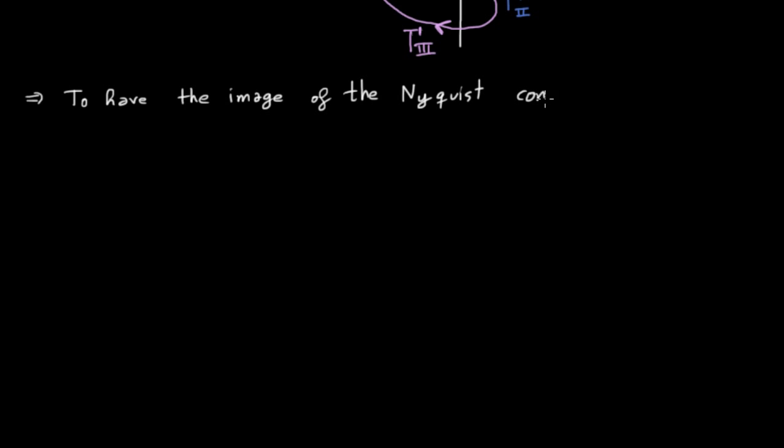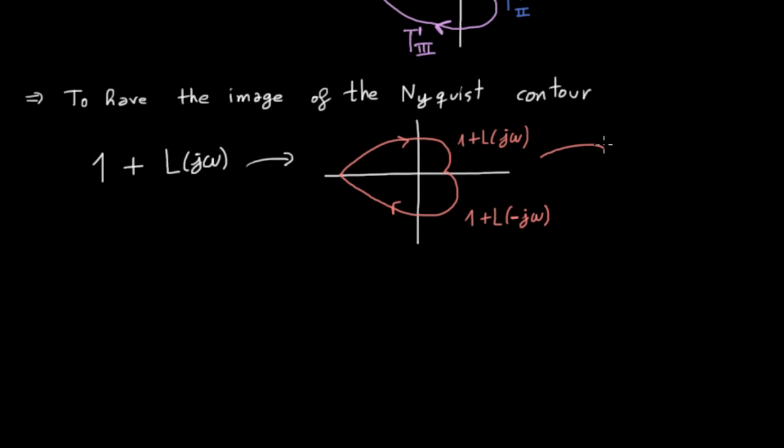In conclusion, in order to have the image of the Nyquist contour, it suffices to take the open loop frequency response, add one unit to it, and draw the result as well as its reflection on the real axis.